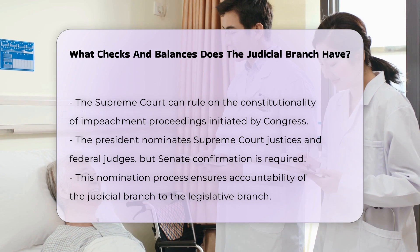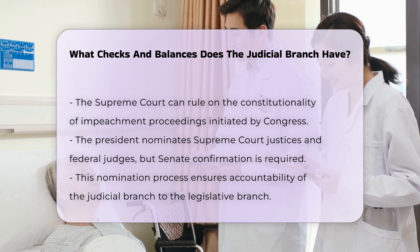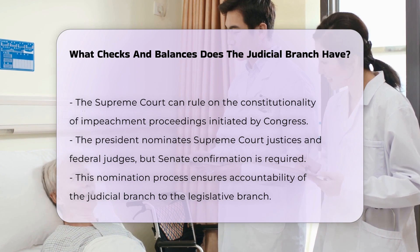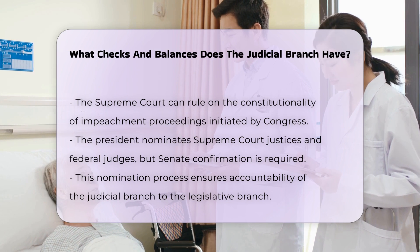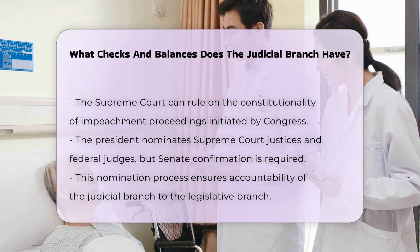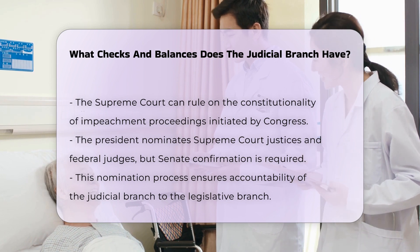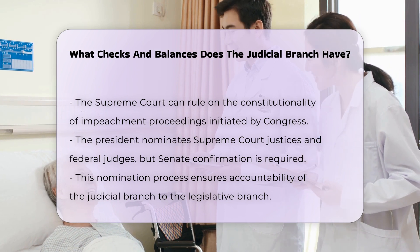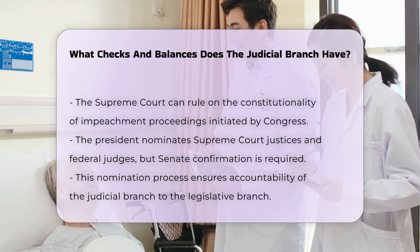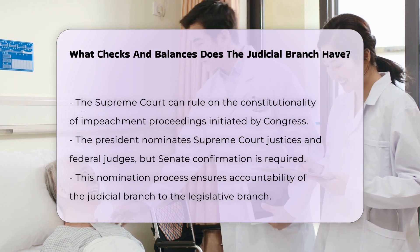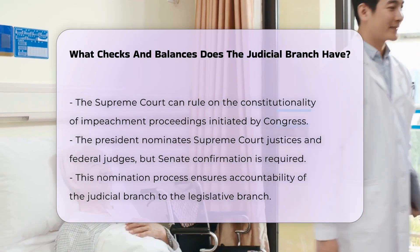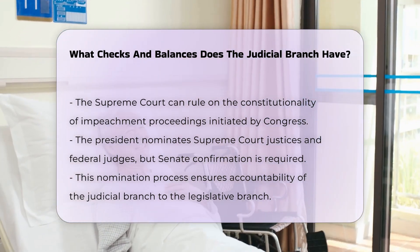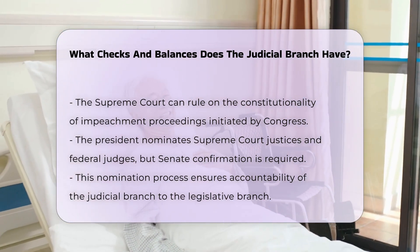The judicial branch is also subject to checks by the other branches. The president nominates Supreme Court justices and other federal judges, but these nominations must be confirmed by the Senate. This ensures that the judicial branch is balanced and accountable to the other branches.